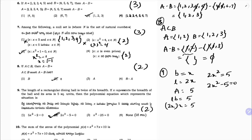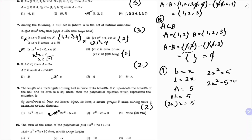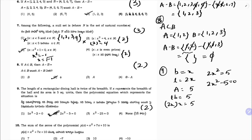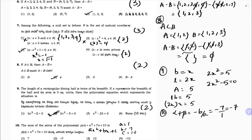Tenth question: find the sum of zeros of the polynomial x square plus 7x plus 10. Sum of zeros, alpha plus beta, equals minus b by a. Comparing with the standard form ax square plus bx plus c, we have a equals 1, b equals 7, c equals 10. So the sum is minus 7 by 1, which is minus 7. The correct option is 2.